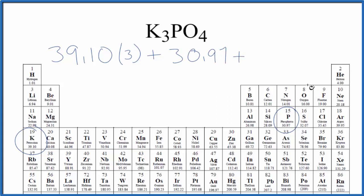And then oxygen, we have 16.00 grams per mole, and we have four oxygen atoms. We'll multiply that by four. When we do all the math, we end up with a molar mass for K3PO4 of 212.27 grams per mole.